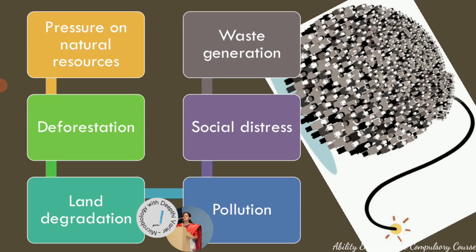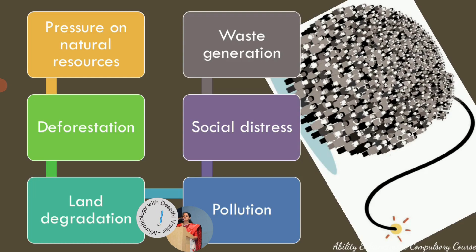The first impact of overpopulation is seen on natural resources. When the population keeps increasing, it exerts extreme pressure on natural resources which are already limited. There is also a theory that gives a correlation between population growth and natural resources, called the Malthusian theory of population. This theory proposes that the population will always grow exponentially, while the food supply — one of the key resources — will grow only arithmetically.